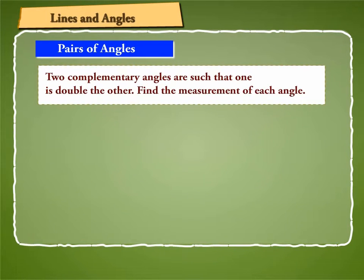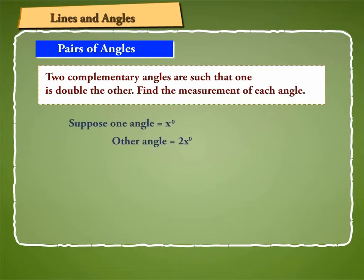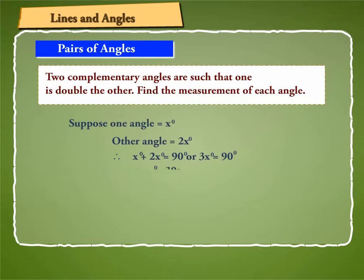Let us find the measurement of two complementary angles such that one is double the other. Suppose one angle is x degrees and the other is 2x degrees. Since they are complementary, x degrees plus 2x degrees is equal to 90 degrees, or 3x degrees is equal to 90 degrees, which gives x degrees equal to 30 degrees. That is, one angle is 30 degrees and the other is 60 degrees.